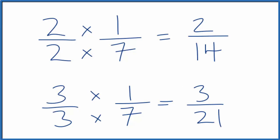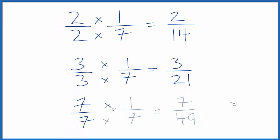One last one, how about 7 over 7? So again, 7 divided by 7 is 1. We haven't changed the value, but we have a different fraction, an equivalent fraction to 1/7.